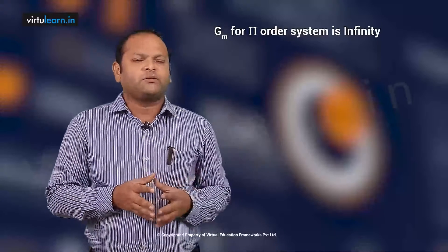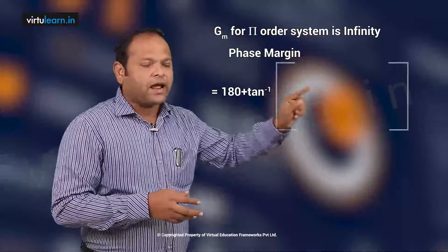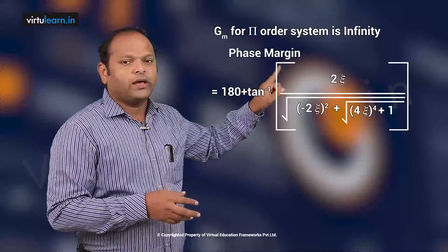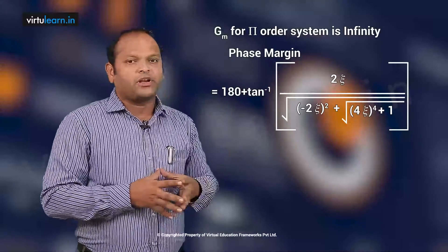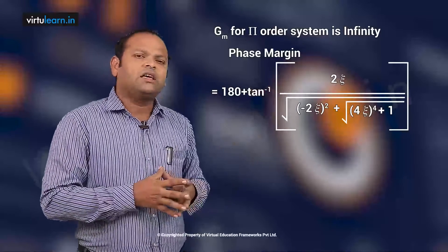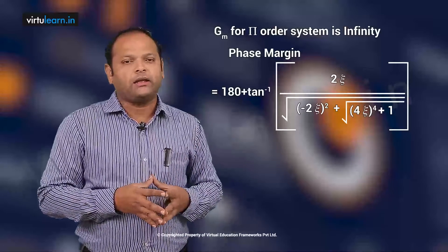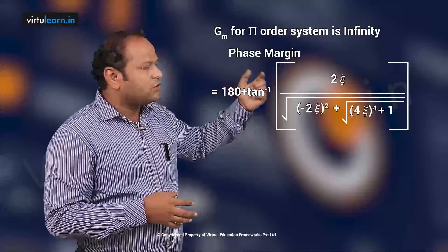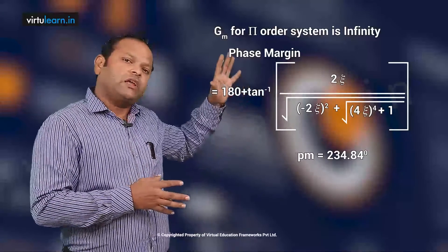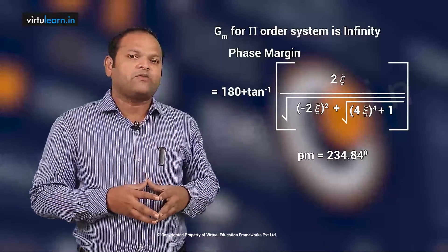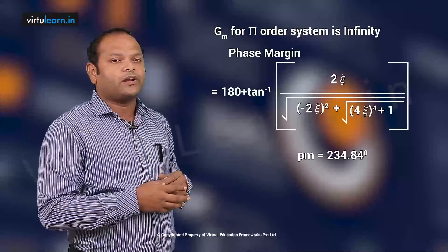For phase margin of a second order system, we use the correlation: PM = 180° + tan⁻¹[2ζ / (√(−2ζ² + √(4ζ⁴ + 1)))]. This formula depends only on the damping ratio ζ. Substituting ζ = 0.602, the calculation gives phase margin ≈ 234.84 degrees. This way, we can design system parameters and verify all other performance metrics for given frequency domain specifications.